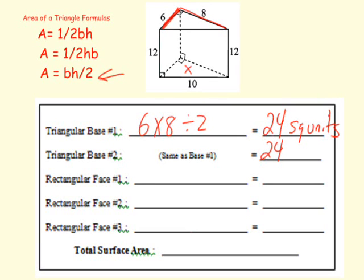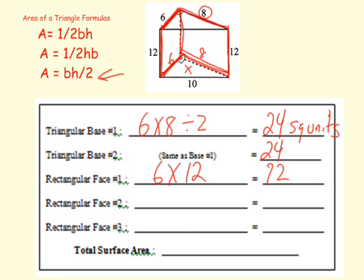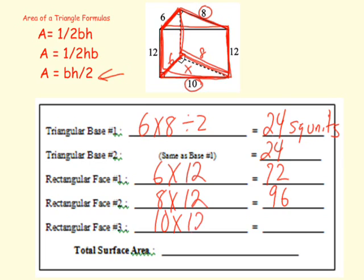Now for the three rectangular faces. The first rectangle has a base of 6 and a height of 12, so 6 times 12 equals 72 square units. The back rectangle has a height of 12 and a base of 8, so 8 times 12 equals 96 square units. And the front rectangle has a base of 10 and a height of 12, so 10 times 12 equals 120 square units.